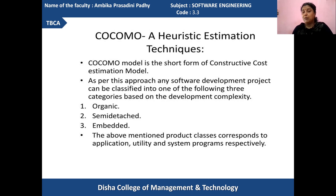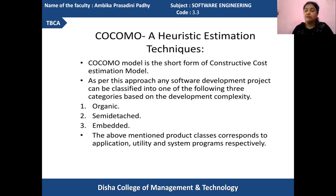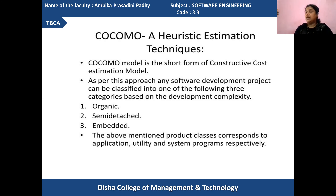It will take the input as the size of the software product, and by looking at the size of the software product it will estimate all the factors like your effort, time duration, and cost required for developing the product. The cost can differ according to the type of software — according to the category of software it is. The categories may be of organic type, semi-detached type, or embedded type.